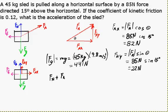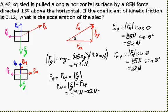It's the normal force plus the vertical part of the applied force that add up to the force of gravity. So the normal force is actually the weight of the object minus 22 Newtons, giving us 419 Newtons.